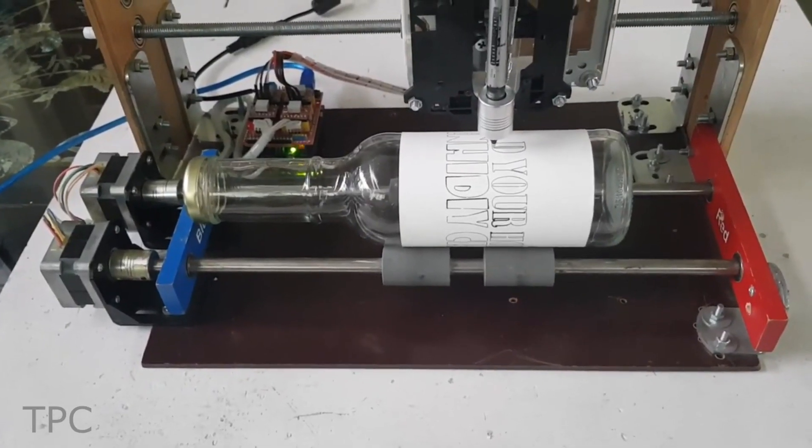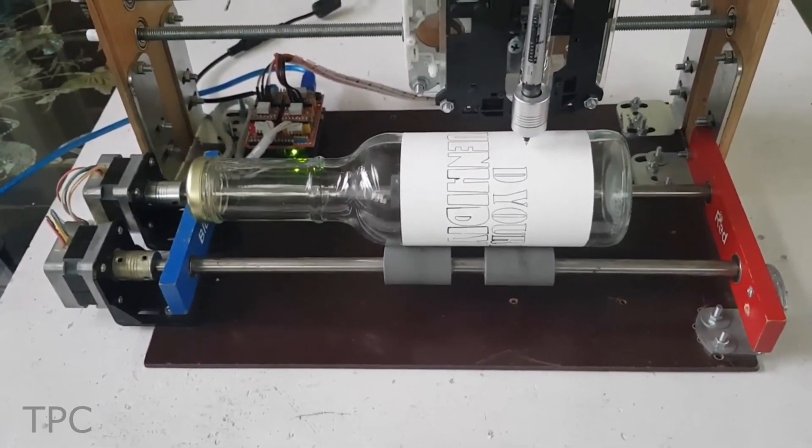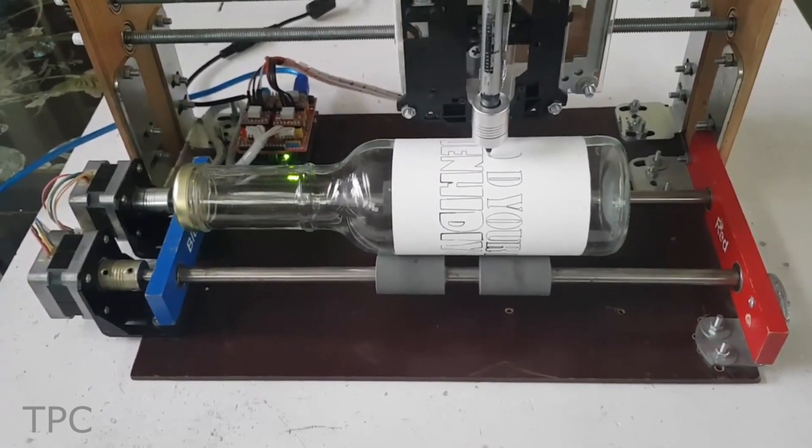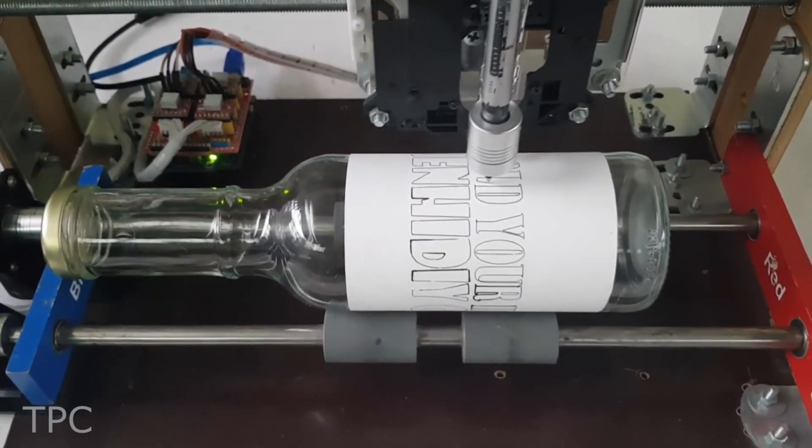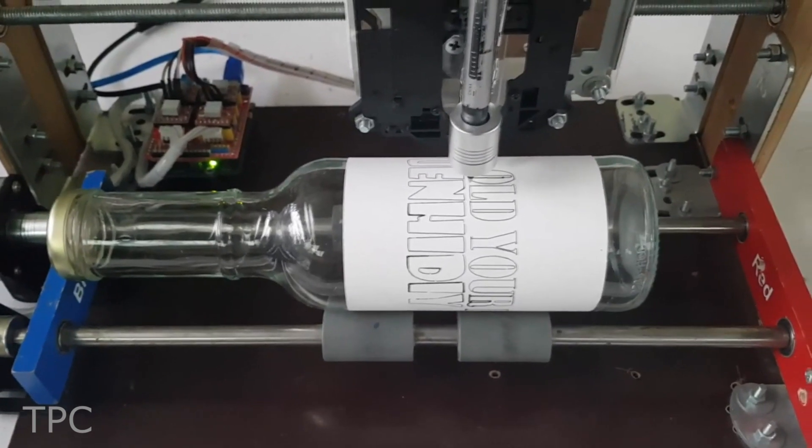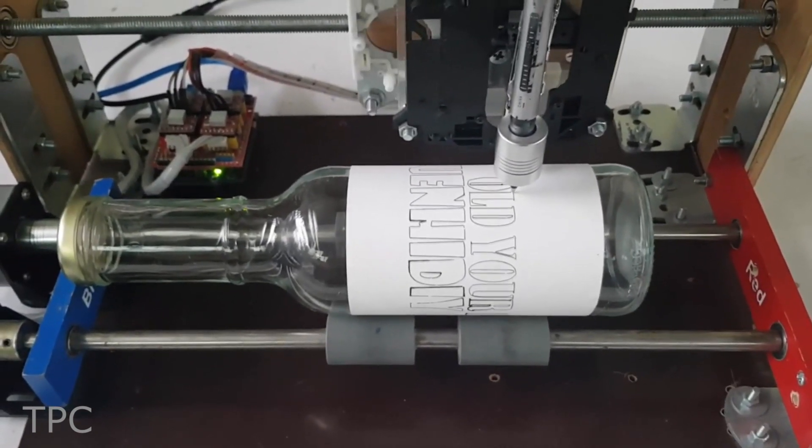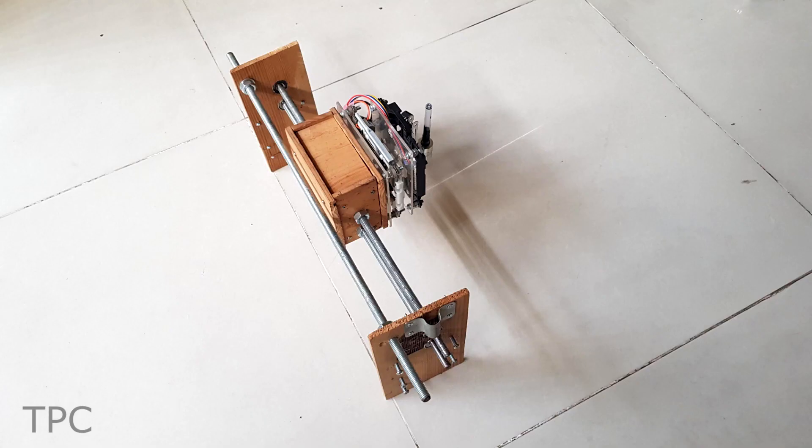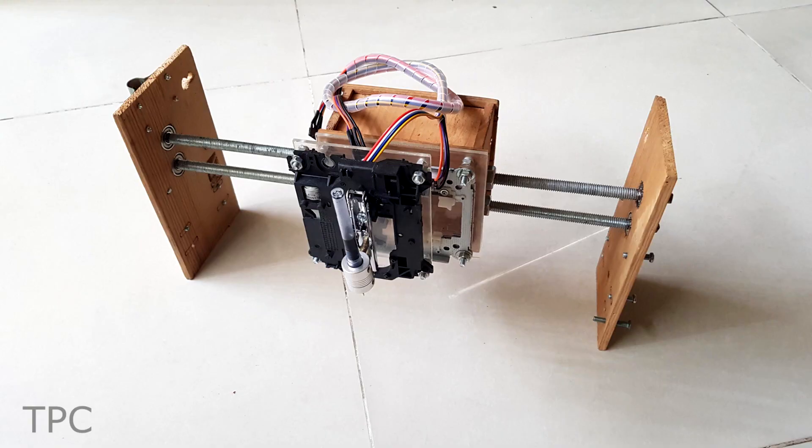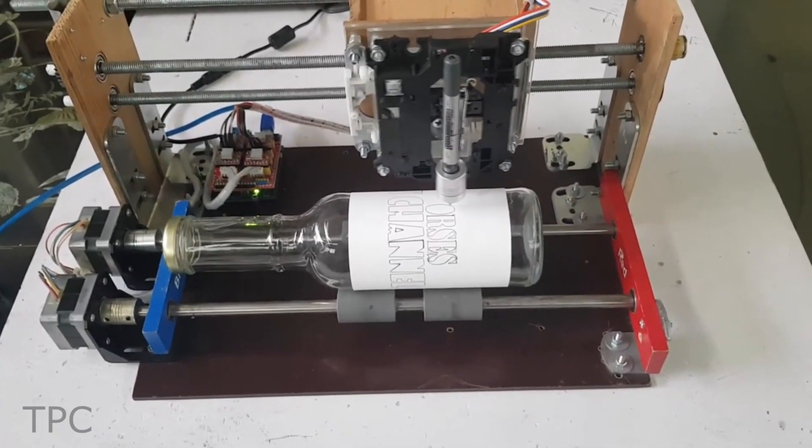Two NEMA 17 steppers near the base of the rig turn in tandem to spin the bottle for marking. The bottle rolls in coordination with an XZ gantry system on top, decorating it with whatever text or drawings are programmed. X and Z actuation is handled by a couple of old DVD players, which are connected at 90 degrees to each other.